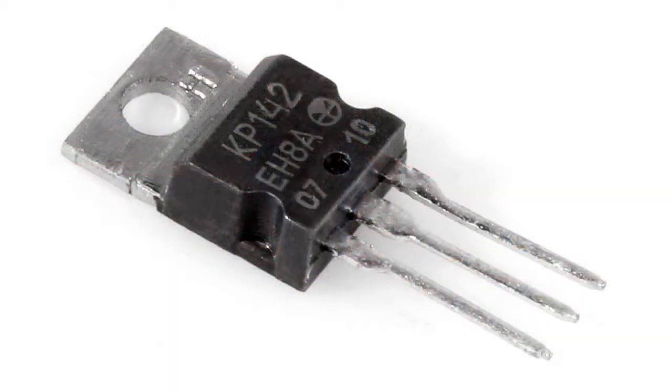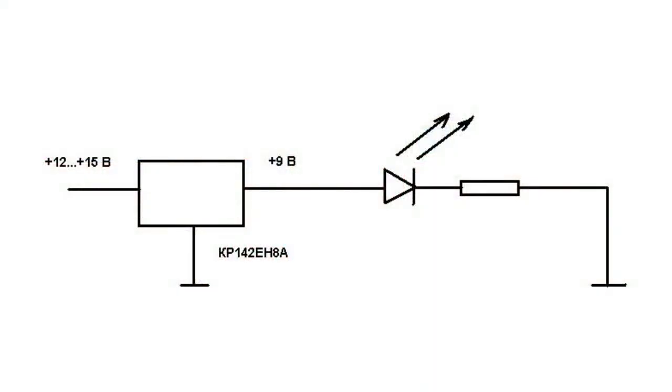This can be, for example, the KP-142 EH-8A. In this case, it is necessary to remember that LEDs with voltage up to 9 volts may be used. The connection circuit of the regulator is shown in Figure 1.